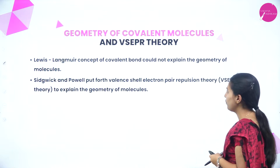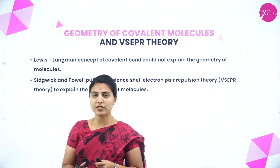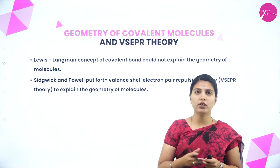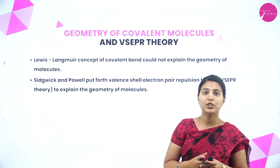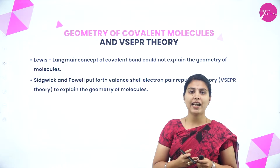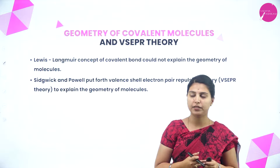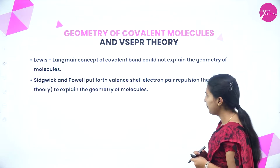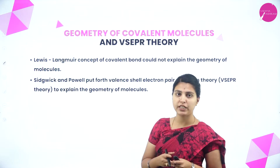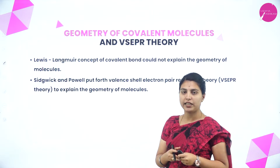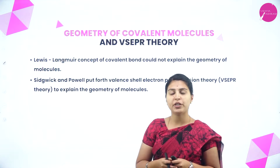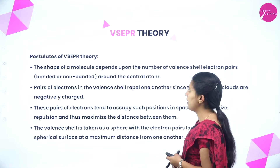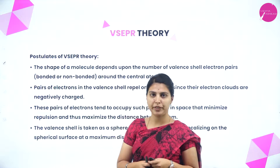The Lewis-Langmuir concept of a covalent bond could not explain the geometry of molecules. It only discussed valency and valence electrons. Sidgwick and Powell put forth the Valence Shell Electron Pair Repulsion theory — VSEPR — to explain the geometry of molecules.